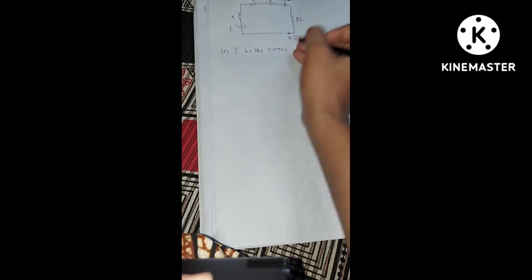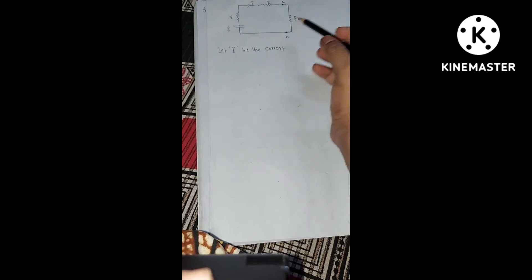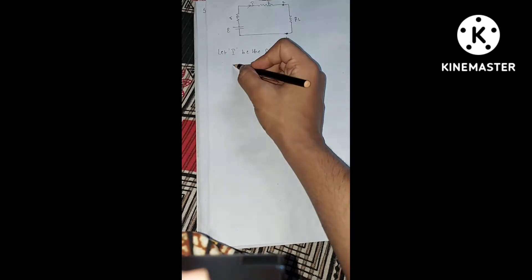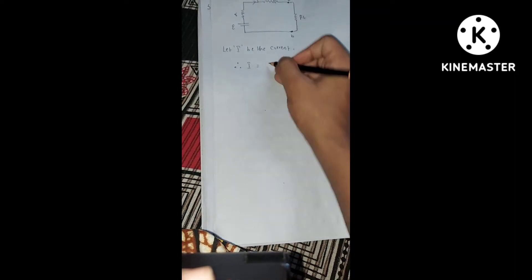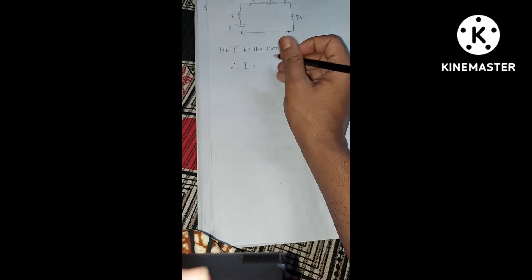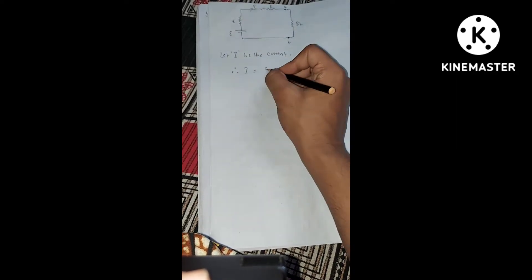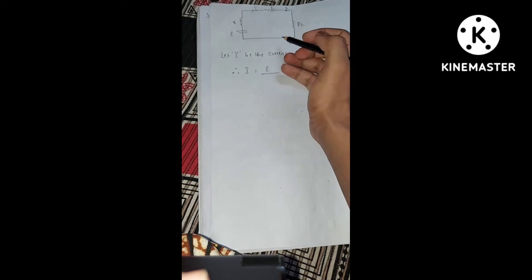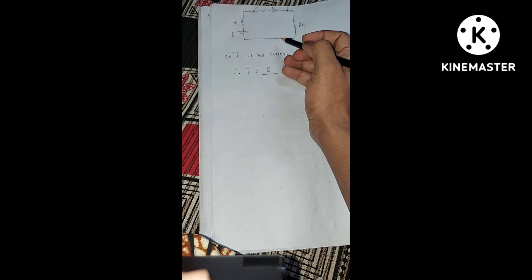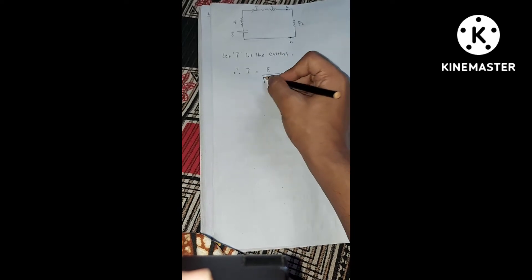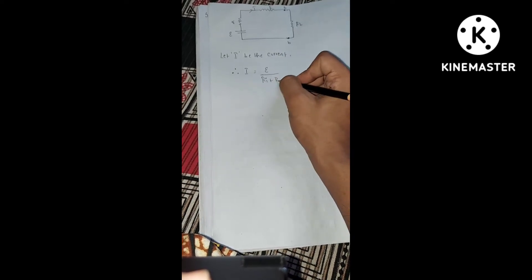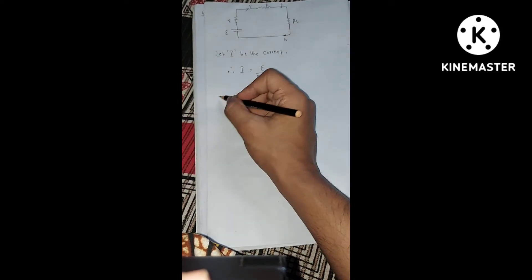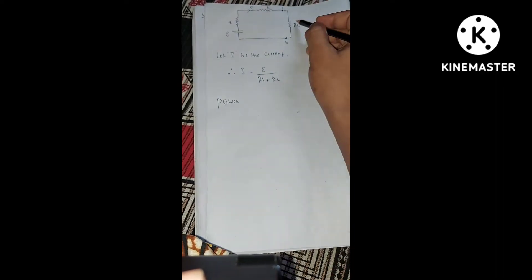Let I be the current. Therefore I will be equal to V divided by R. Here V is nothing but E, and R is the total resistance in the circuit — that is your RI (resistance of the circuit) plus your RL. So I = E / (RI + RL).